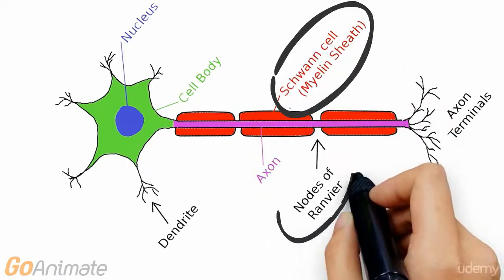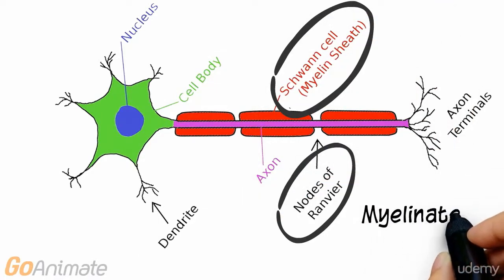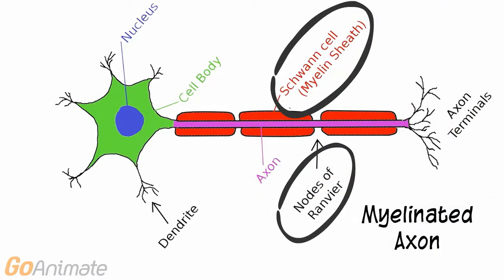Myelinated axons have Schwann cells that produce myelin, a lipid substance. They also have gaps in the myelin called nodes of Ranvier.